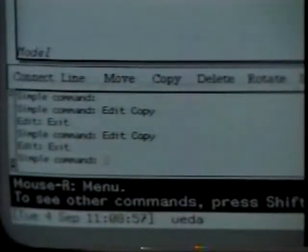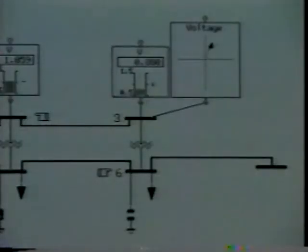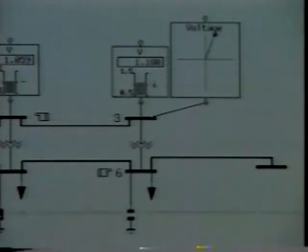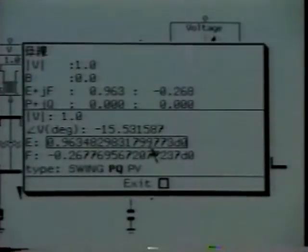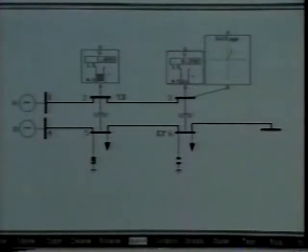The model that is to be used as an object of study is easily constructed by use of a mouse. Let's construct a model of an electric power system. To begin with, we shall copy the buses from the icon menu and join them by a power transmission line. The internal variables of each of the components can be directly set by using a tool. Alternatively, the menu can be called up and numerical values input.